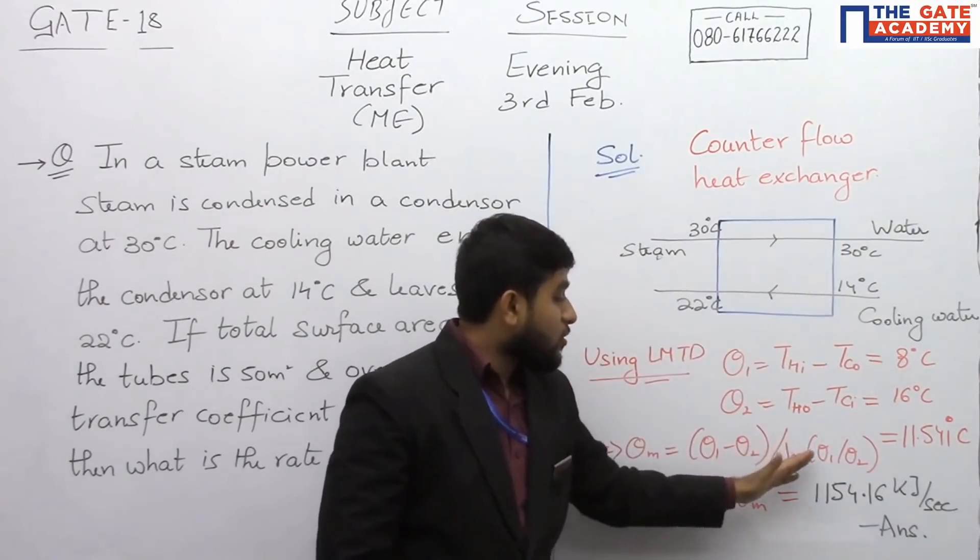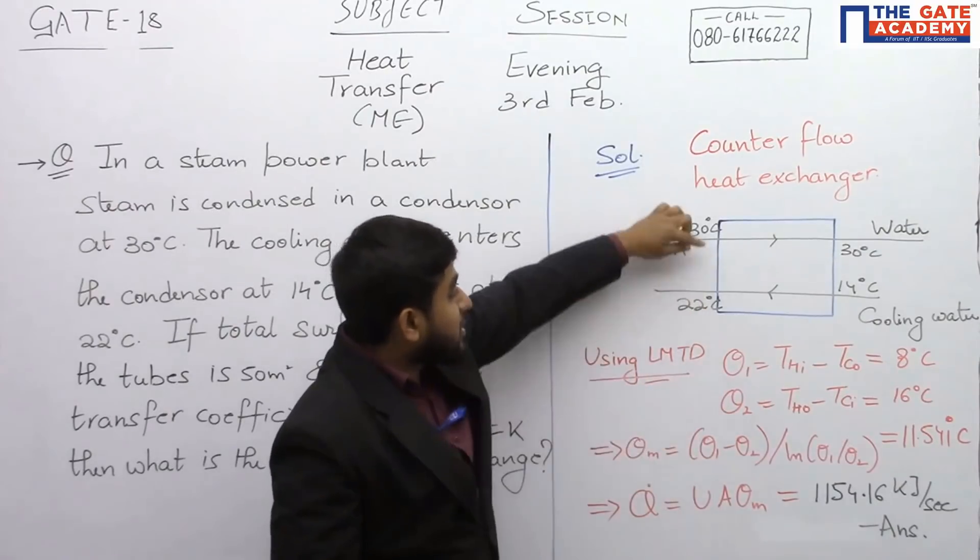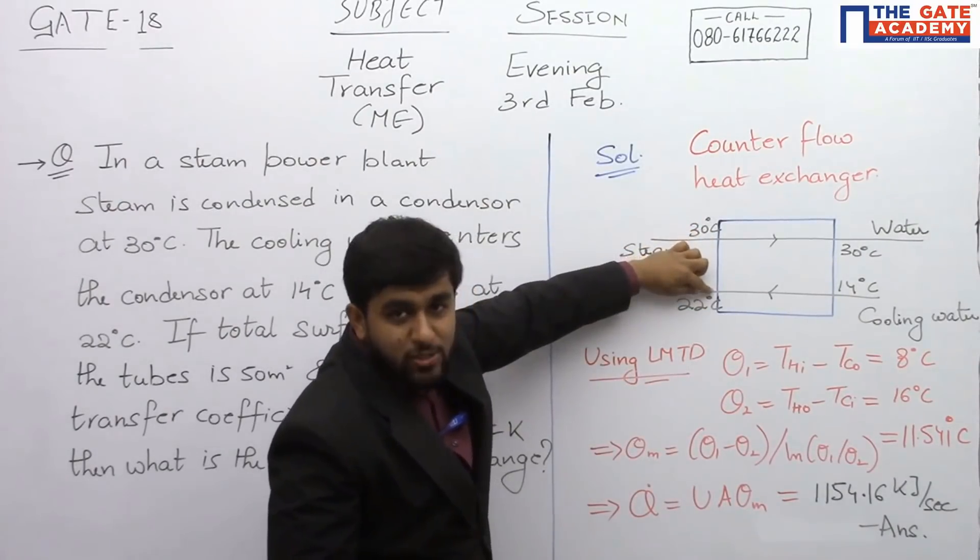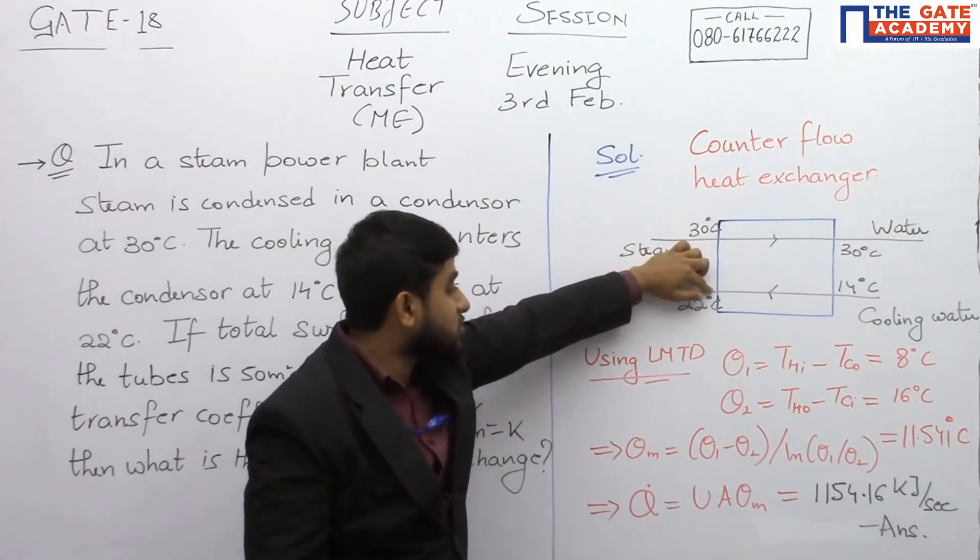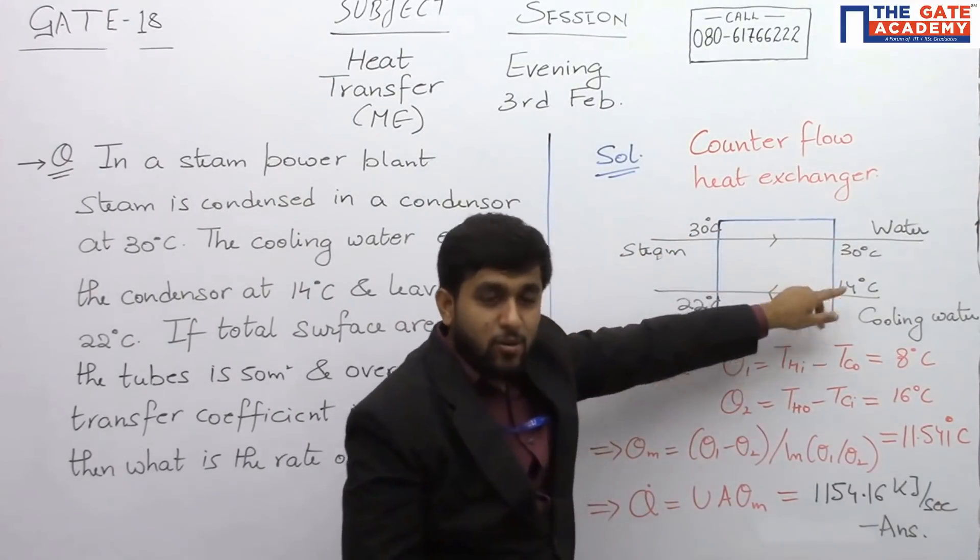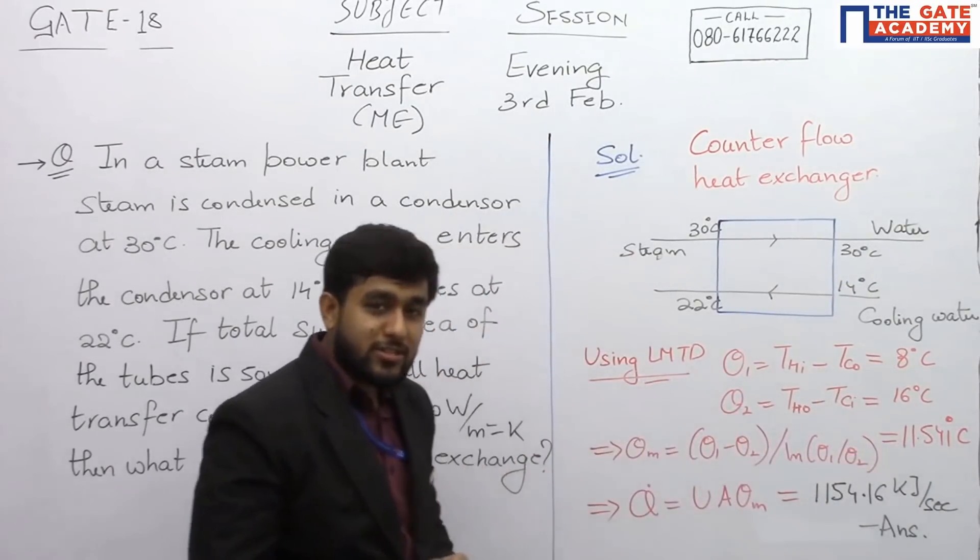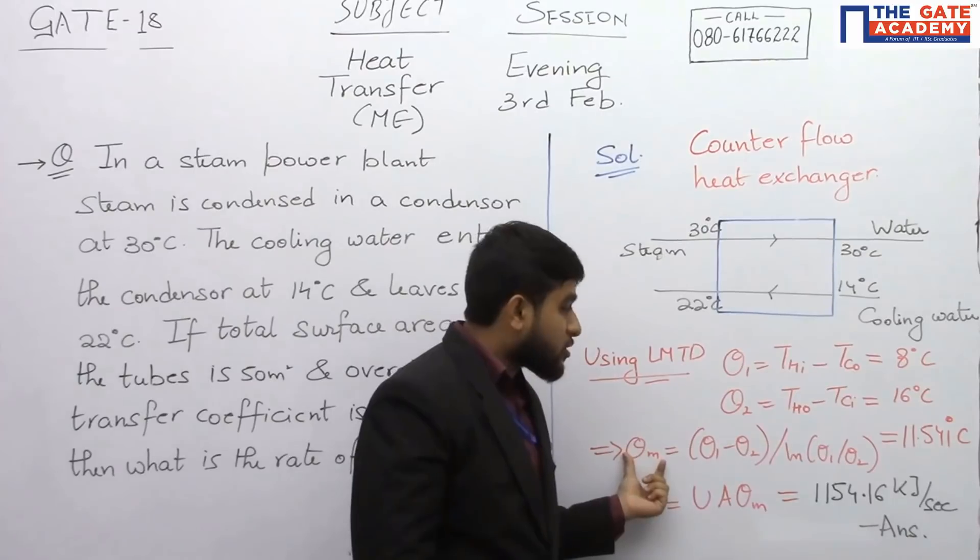What is theta one? Theta one is Th_i minus Tc_o since this is a counter flow heat exchanger. Theta two is Th_o minus Tc_i. Based on this, theta one becomes 8 degrees Celsius, theta two becomes 16 degrees Celsius. So logarithmic mean temperature difference, which is this, will be equal to 11.541 degrees Celsius.